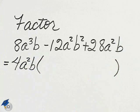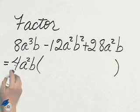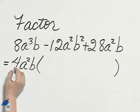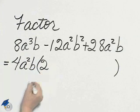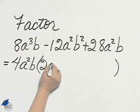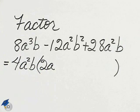Within these parentheses will be the three terms that give us back our trinomial. 4 times 2 makes the 8. I need another a. Don't need any more factors of b.